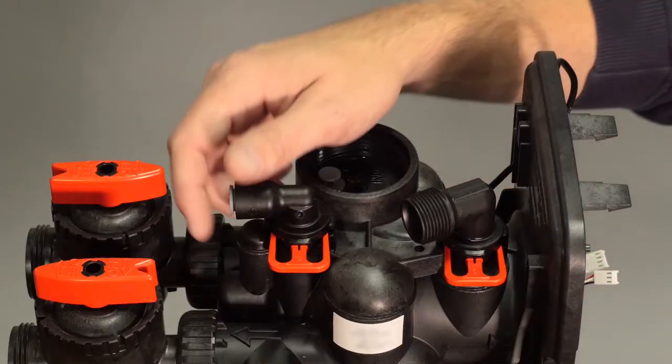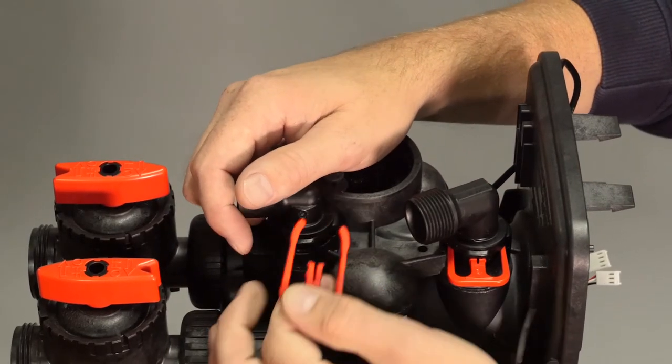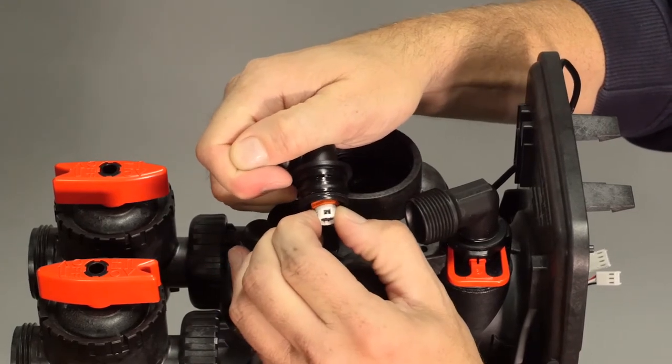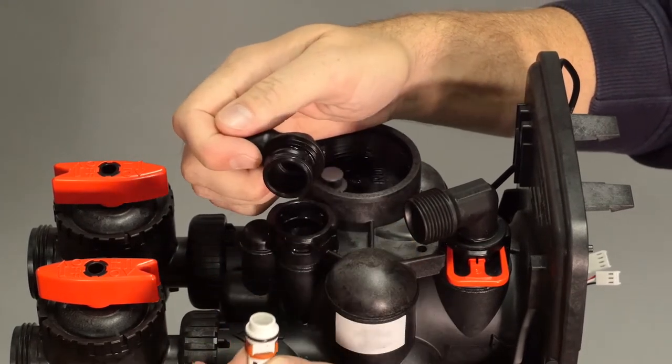To release the refill elbow, pull out the locking clip and pull the elbow up. The refill flow control retainer can be pulled straight out of the refill elbow.